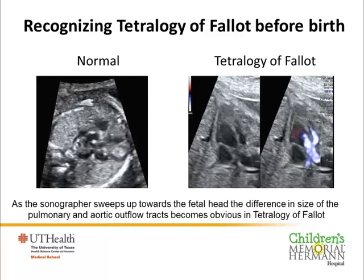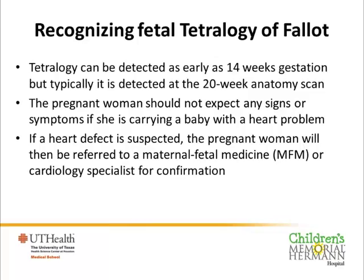This difference in the sizes of the big arteries is almost always seen in Tetralogy of Fallot even in an unborn baby. We can pick this up as early as 14 weeks, but typically it's detected at about 20 to 24 weeks of gestation when most pregnant mothers have their detailed anatomy scan. The pregnant woman herself will not suspect anything and should not expect to have any signs or symptoms, even if she's carrying a baby with quite a serious heart problem.